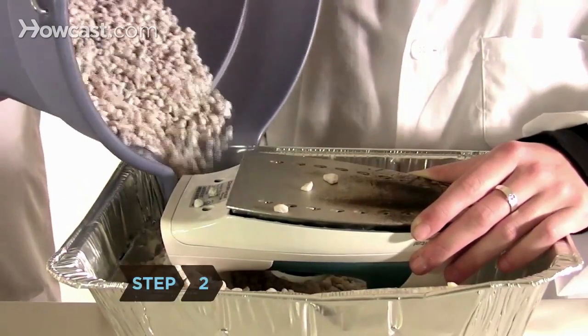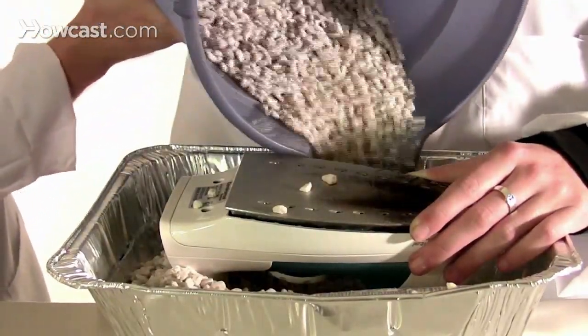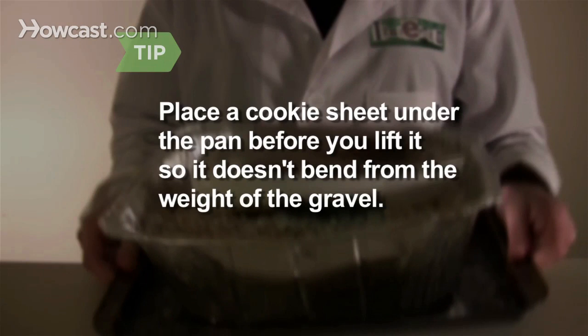Step 2: Fill the pan with pebbles or gravel so that the iron is stabilized in the center of the pan, flat side up. Place a cookie sheet under the pan before you lift it so it doesn't bend from the weight of the gravel.